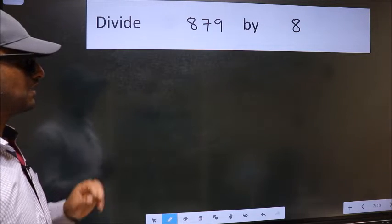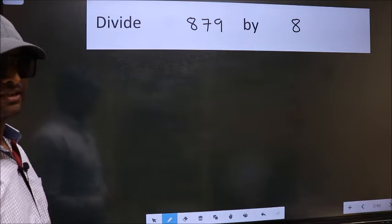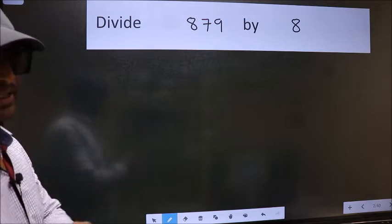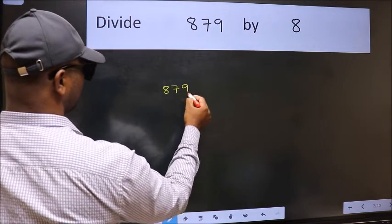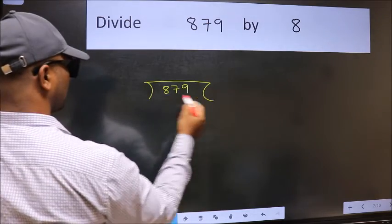Divide 879 by 8. To do this division, we should frame it in this way. 879 here and 8 here.